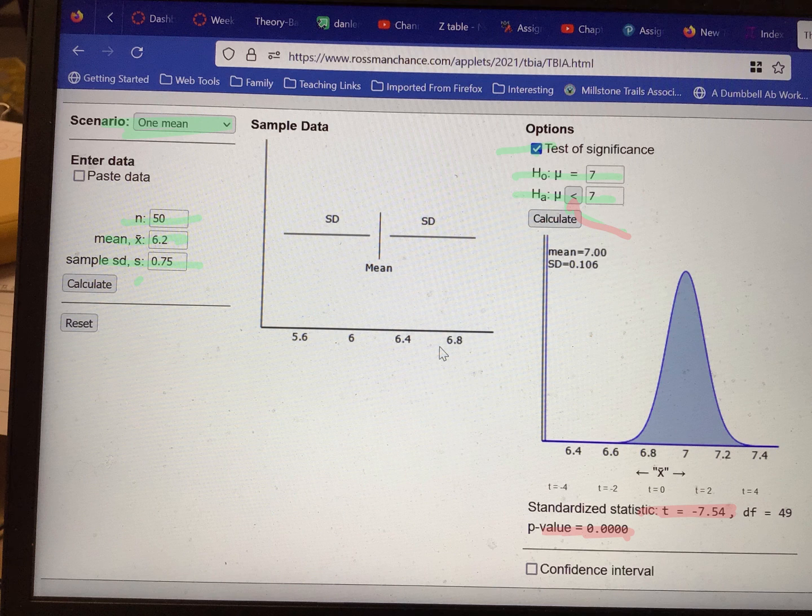Did you see there how I said reject H0? I didn't say we're going to accept H1. That's important. We can never accept, we should never accept the alternative hypothesis. The data just tells us whether we can reject the null hypothesis. Is that center the true center? If it's far enough away we can say no.